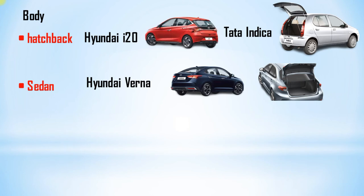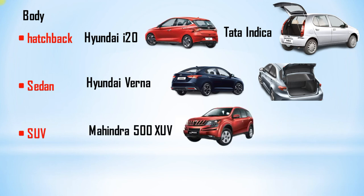Sedan cars are more aerodynamic and closer to the ground, which helps in better handling compared to hatchbacks. They are more spacious with a good boot space — more trunk area than a hatchback — so more goods can be carried. Sedans also come with a more powerful engine. SUV stands for Sports Utility Vehicle. SUVs have better ground clearance and come equipped with four-by-four technology to tackle bad and rough roads. Full-size SUVs can accommodate up to seven passengers.